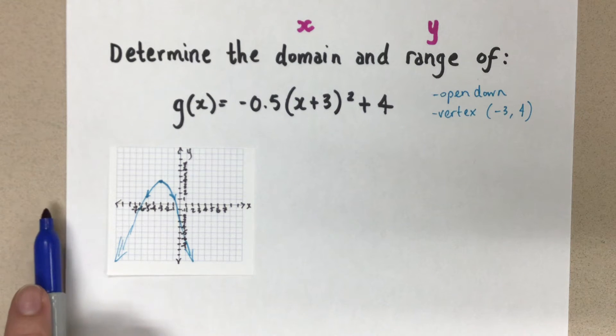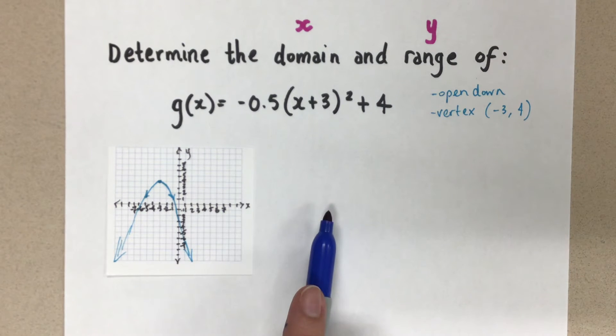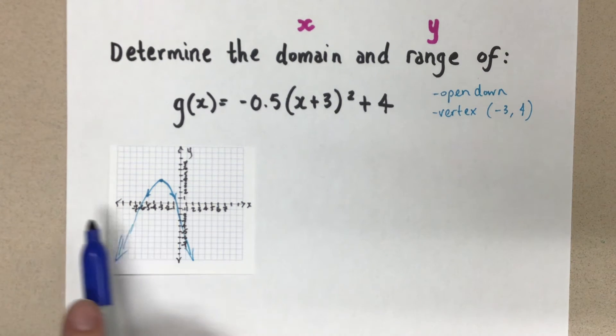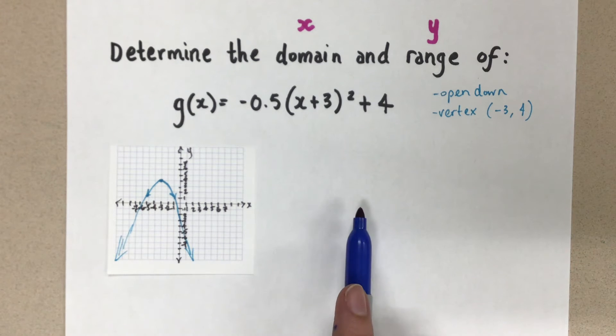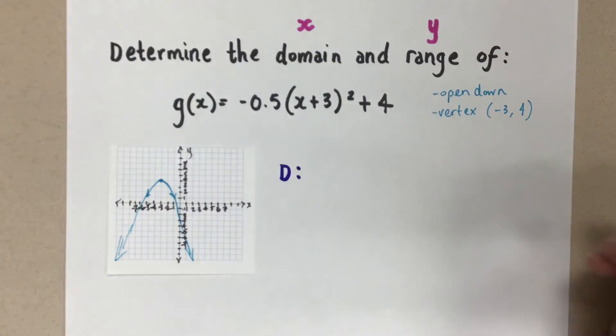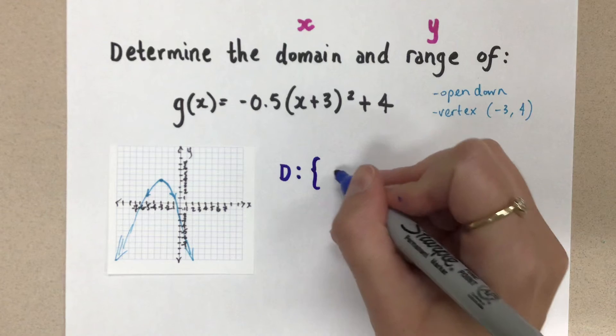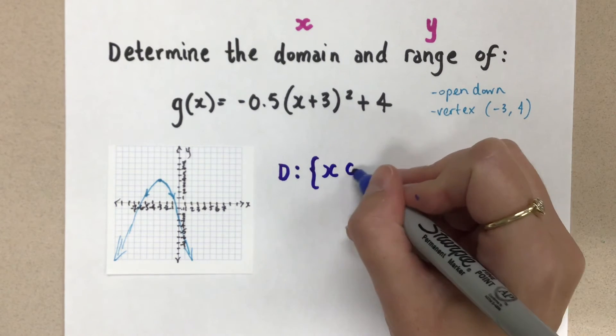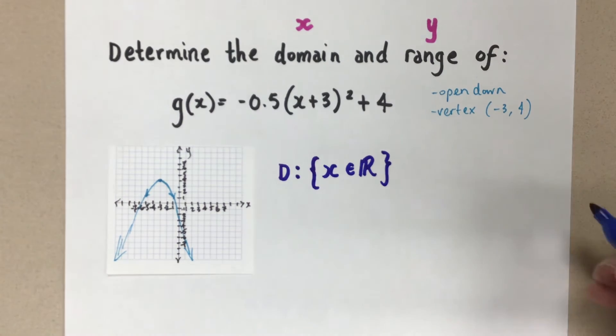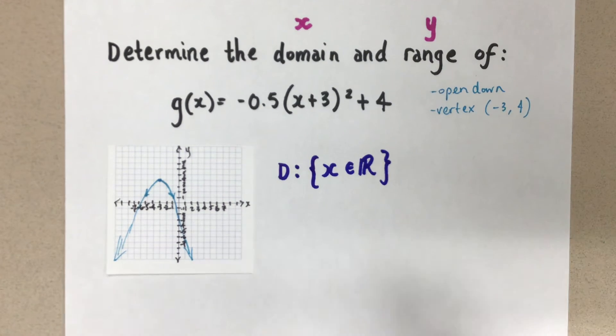So as we move from negative infinity to positive infinity, horizontally, there is not a value here that x won't touch. x touches all of the numbers. And we're dealing with the real numbers here. So we're going to say that the domain for this function, and I'm going to do it in set notation, x is an element of the reals. x belongs to the real numbers here. And there are no restrictions. That is it.